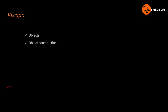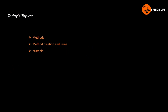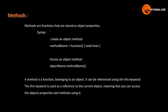So we will use methods as a constructor. Methods are a function that are stored as object properties. The syntax is: the method name is equal to function, followed by parentheses. Inside the parentheses, the parameters can be empty or include values like a, b, etc.